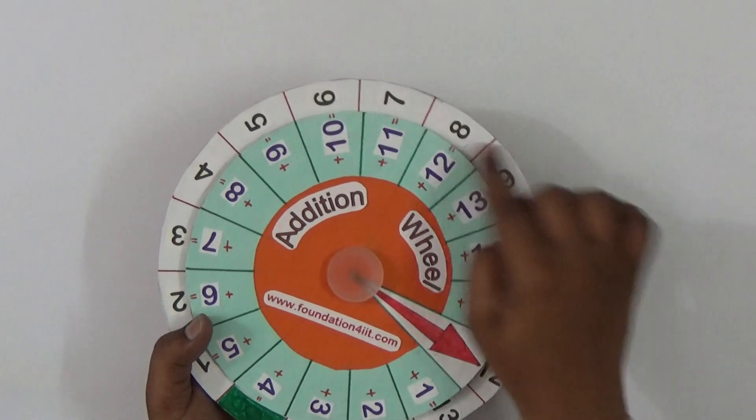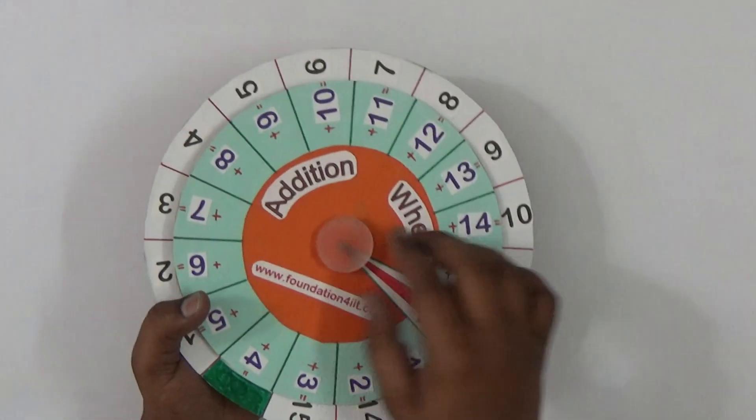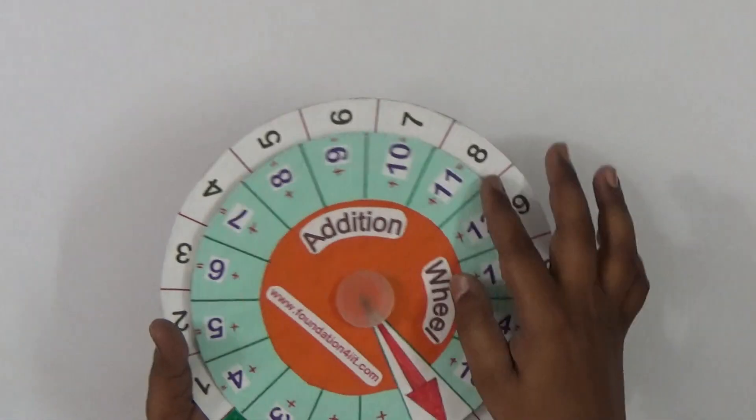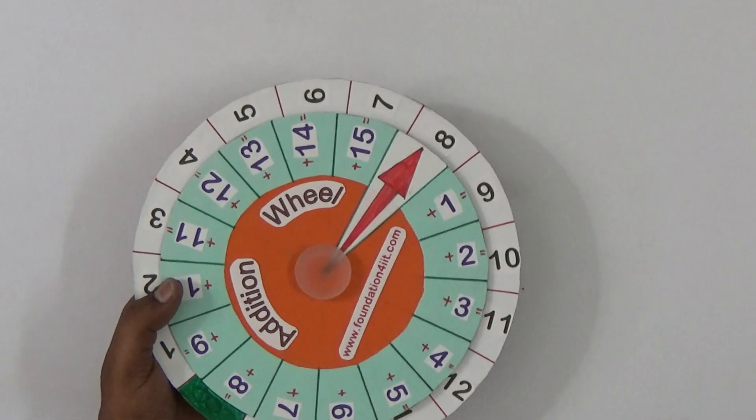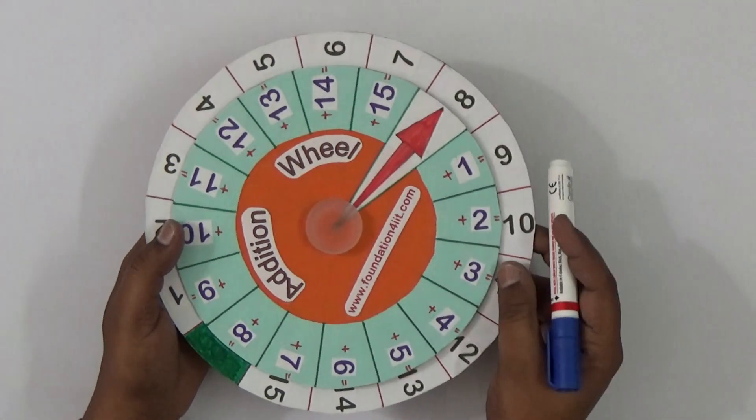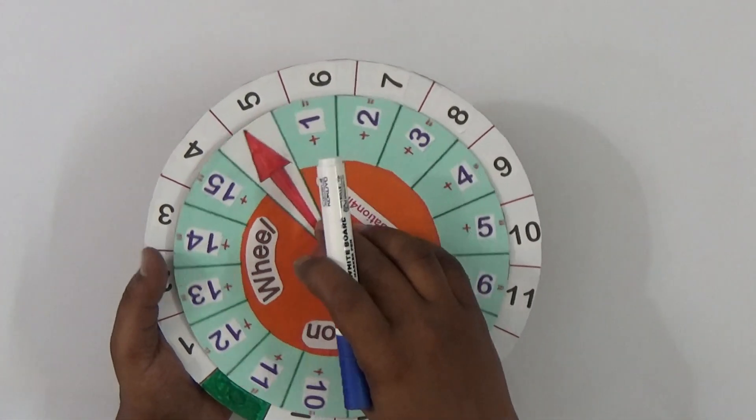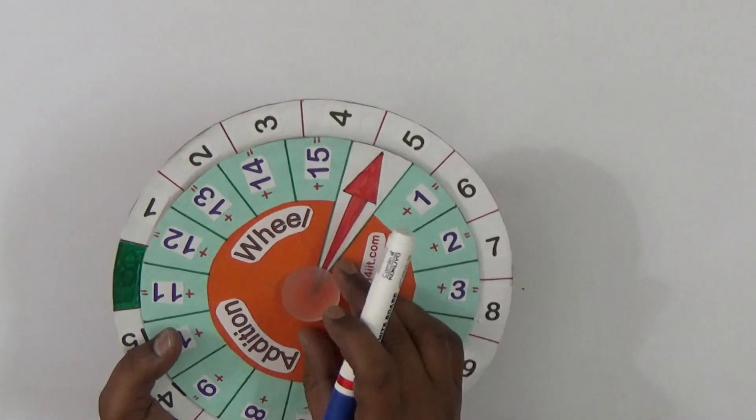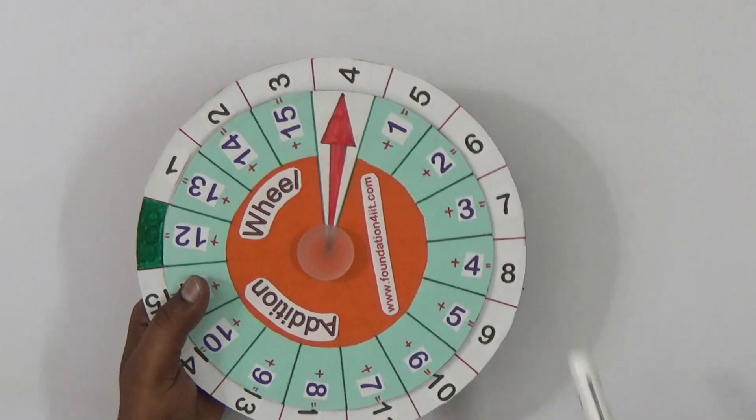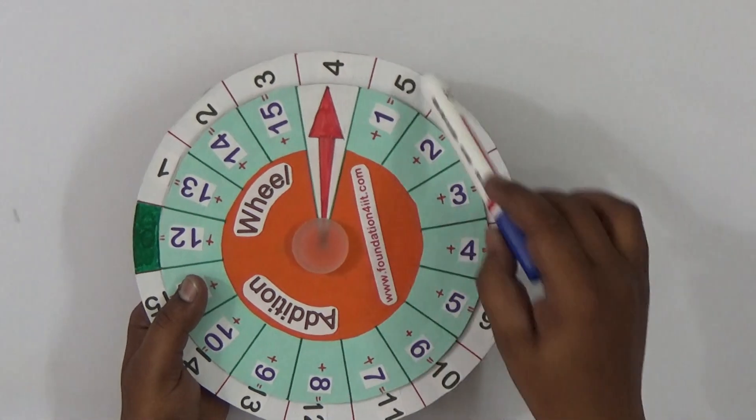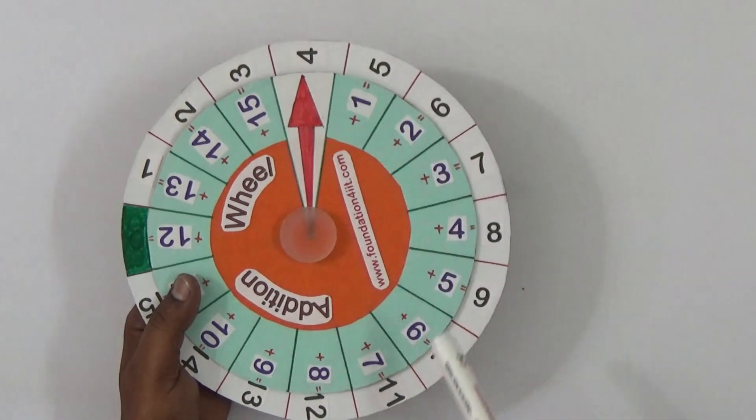Especially for primary children we can use this to make them understand very clearly, and in a fun way they can learn also, just by turning this wheel. So you can understand - okay, if I keep it at four, this should be exactly pointing to four. Four plus any one of these numbers - the answer is here. Okay, four plus six is ten. Like this, this is the way we can make this project and help them understand.